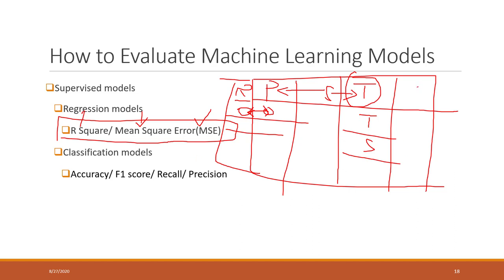For classification, we again use predicted results — townhouse, single family house — and compare against the original true data. But we use different measures: accuracy, F1 score, recall, or precision. I will talk about those on the next slide.